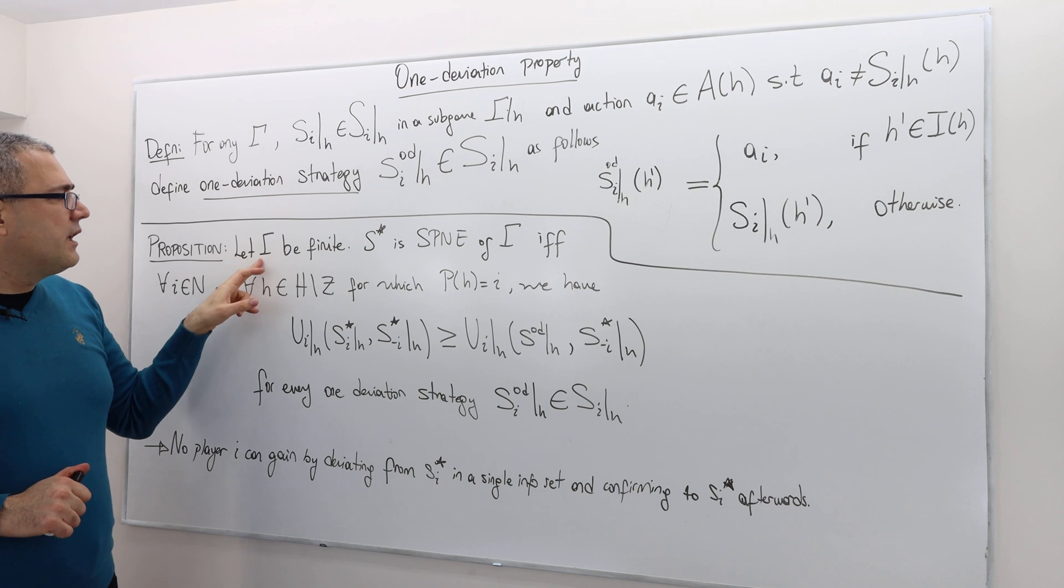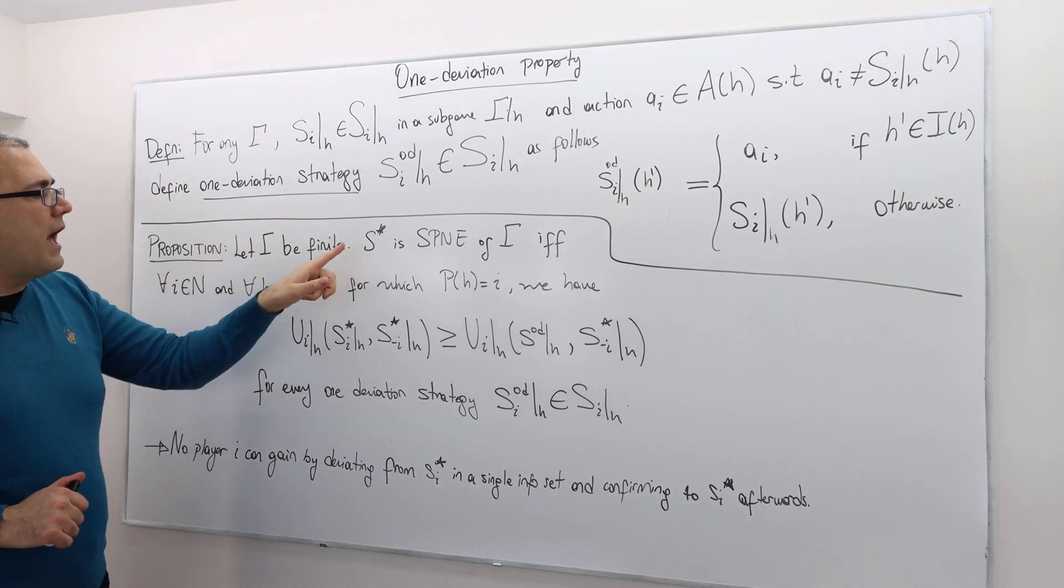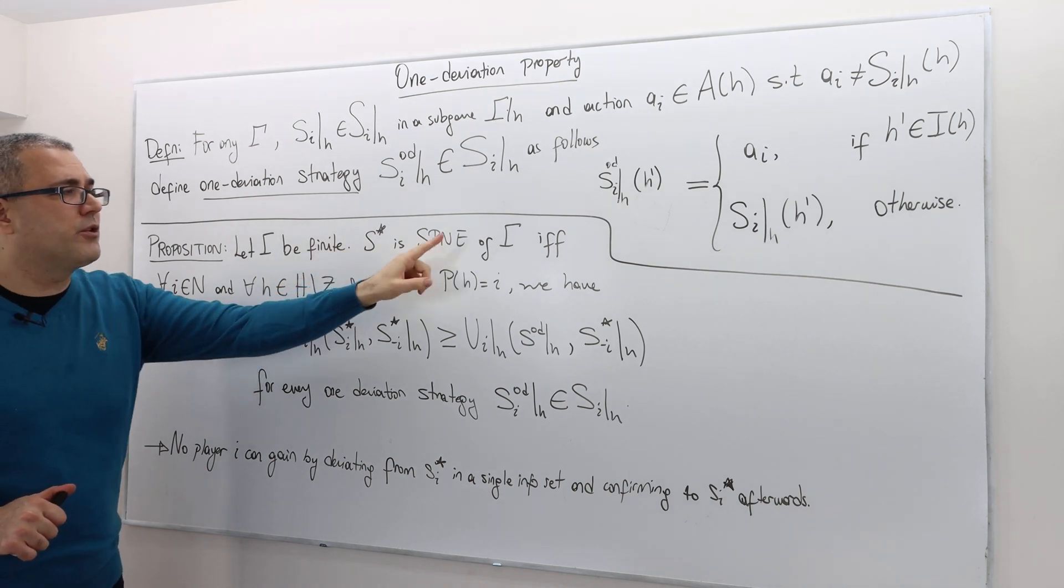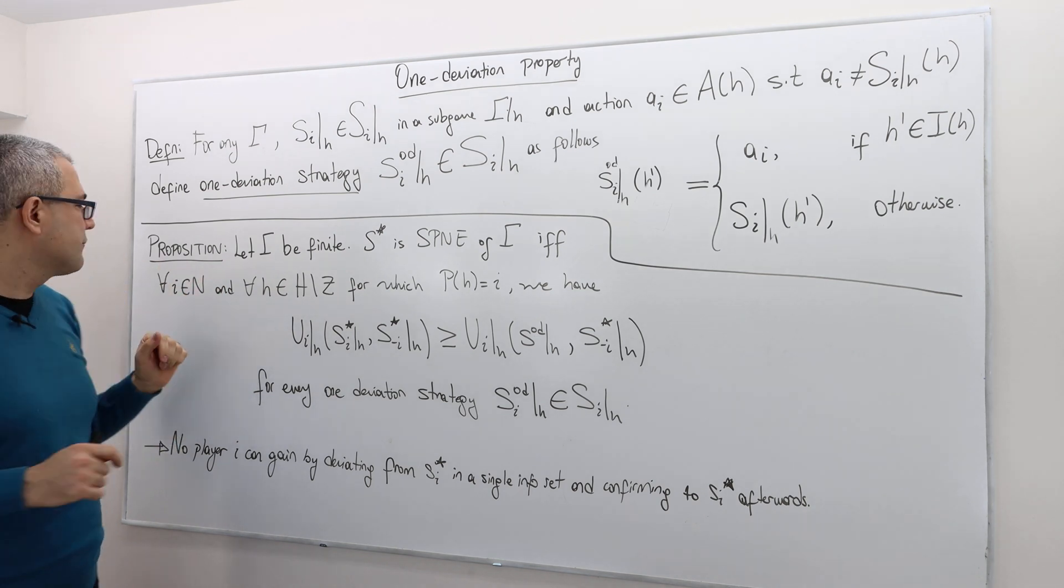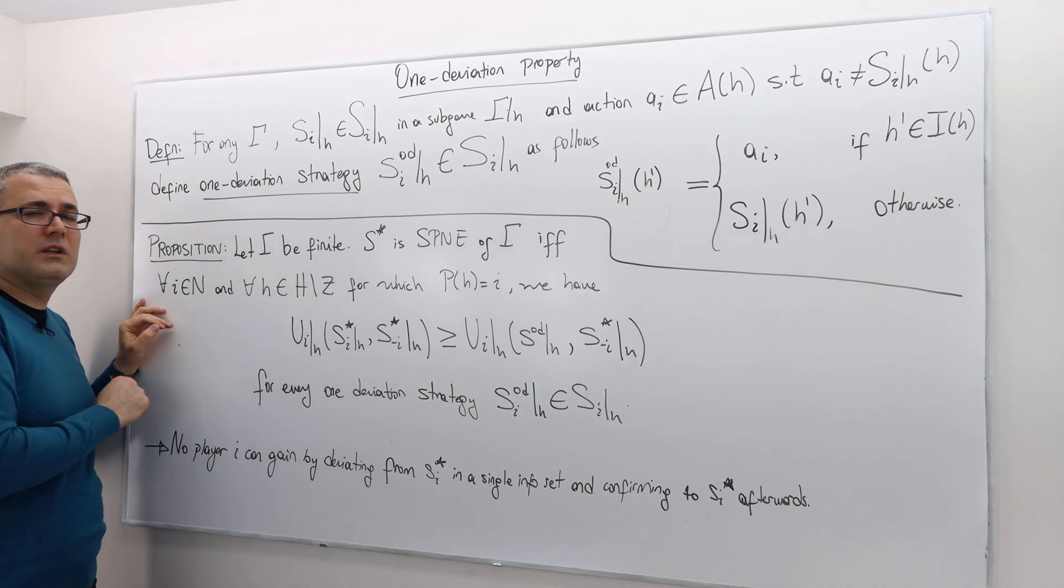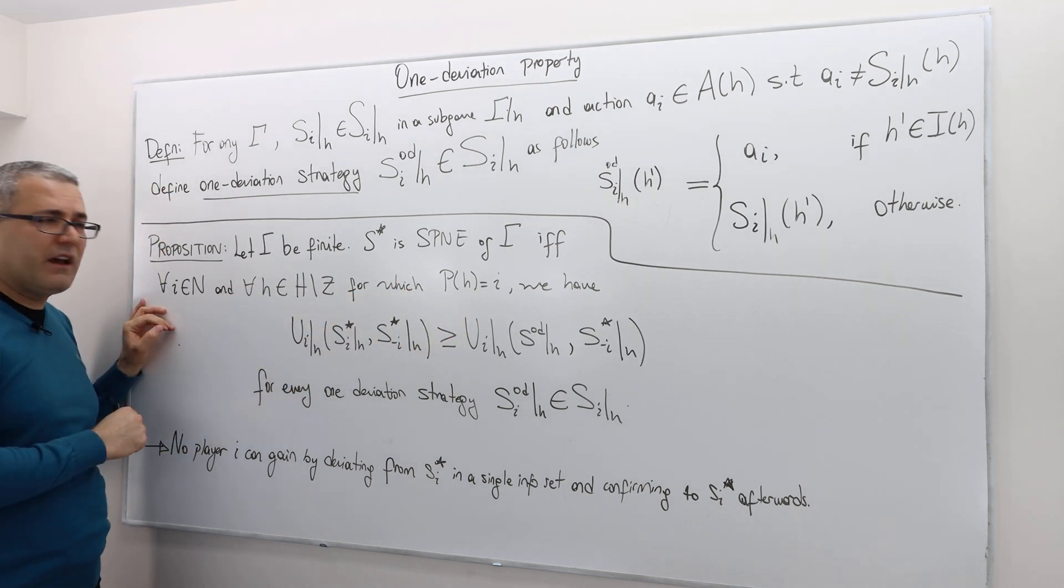Suppose that our extensive form game is finite. So that's crucial. And the strategy profile denoted by S star is sub game perfect Nash equilibrium of this game. If and only if for every player I and for every non-terminal history where player I makes a move, we must have the following.